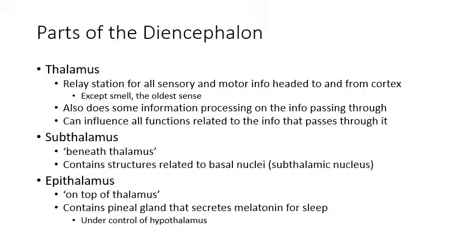All voluntary motor information coming down from the cortex also stops in the thalamus before continuing to the spinal cord and nerves. For motor information, it starts in the cortex, goes to the basal nuclei to be gated, then goes to the thalamus, and from there proceeds down to the spinal cord. The subthalamus is beneath the thalamus and contains structures — specifically the subthalamic nucleus — that give input to the basal nuclei.